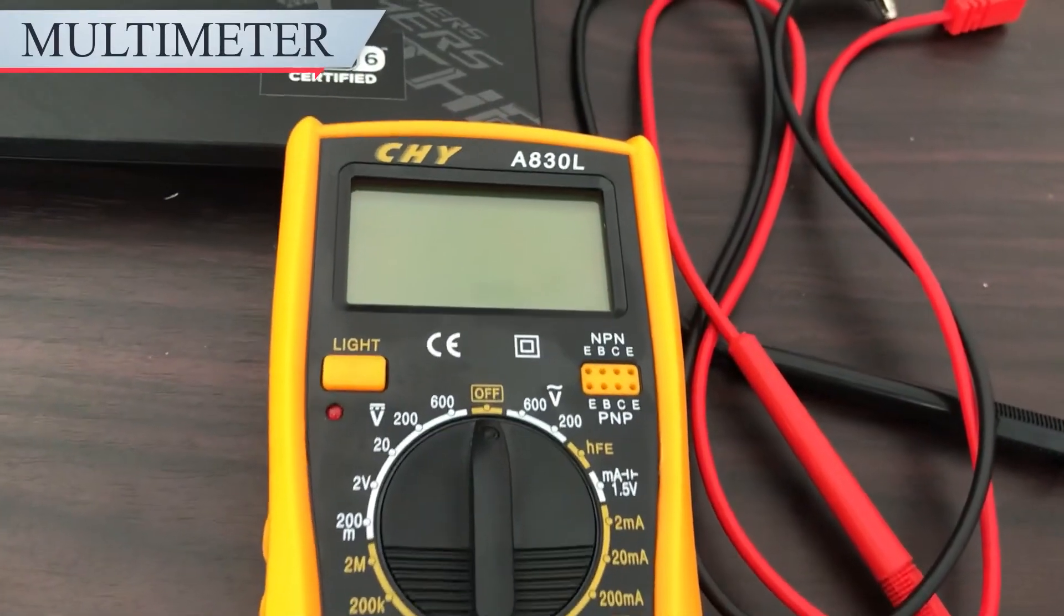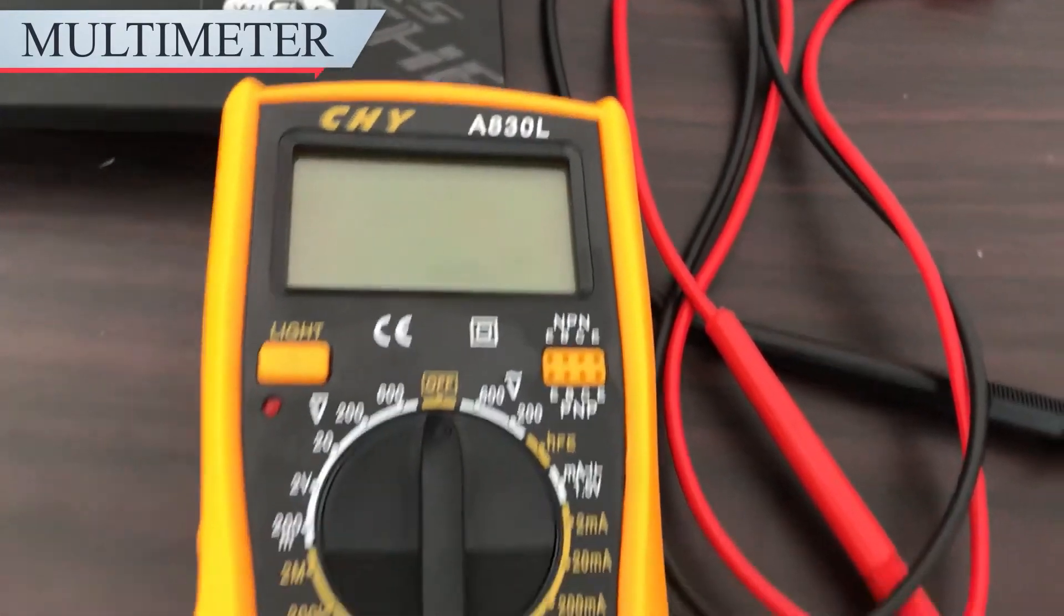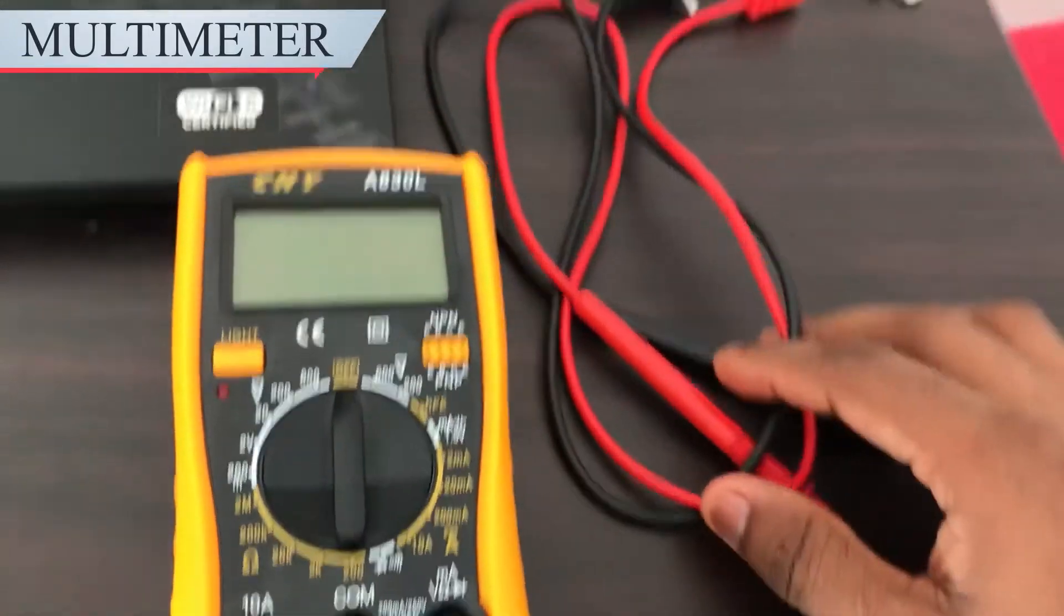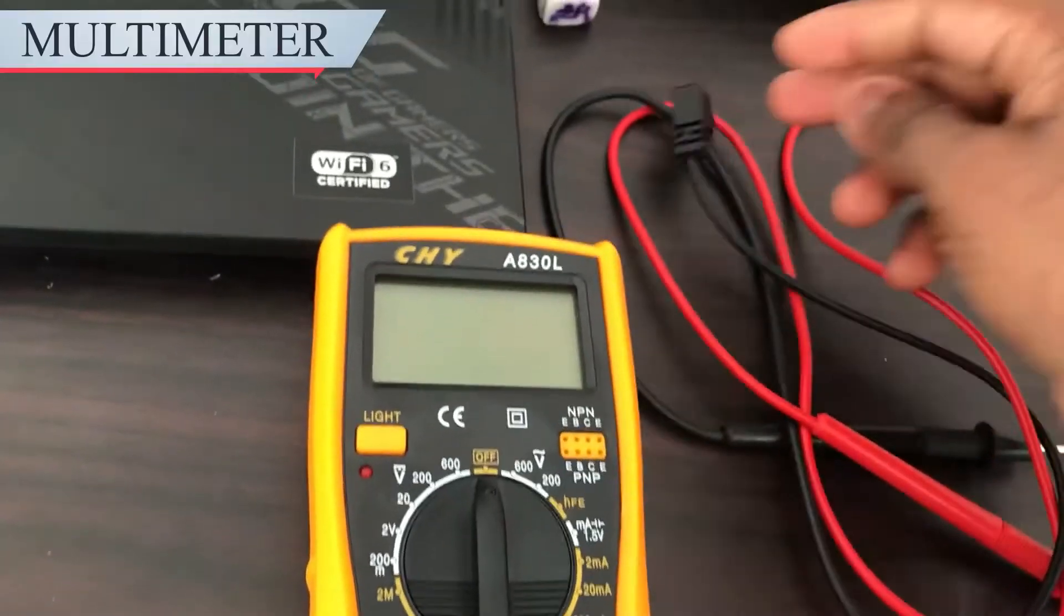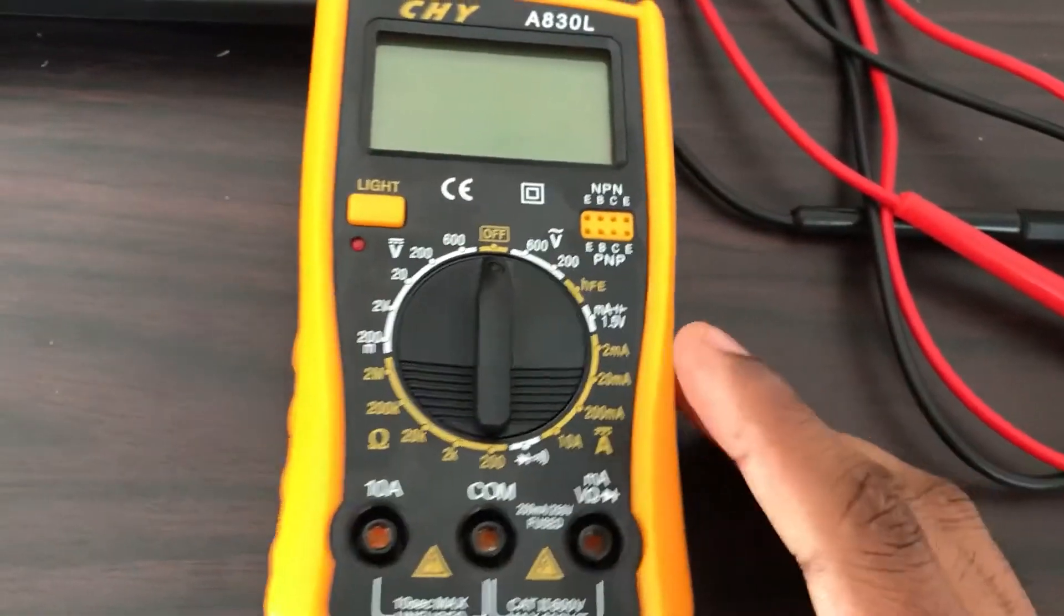Okay, in this video we will be looking and learning about the multimeter. So here you see a multimeter, and with the multimeter you get two leads: the black one and the red one.